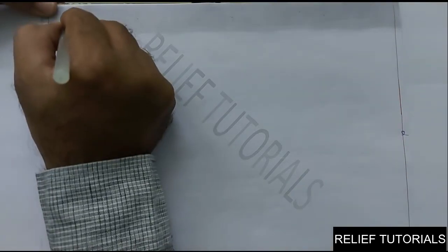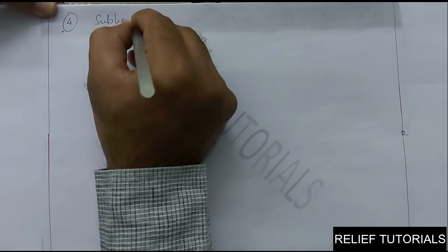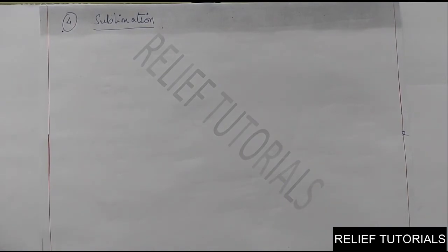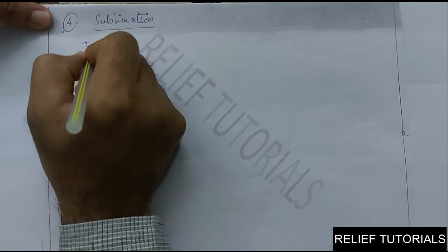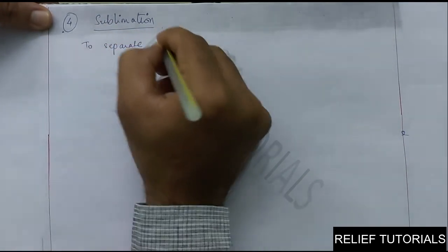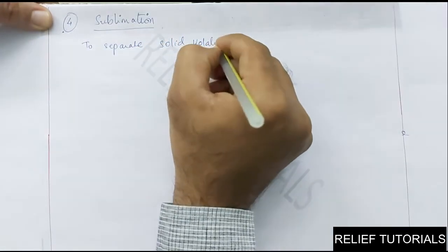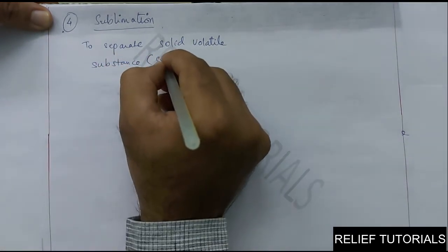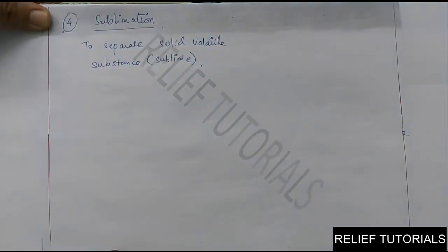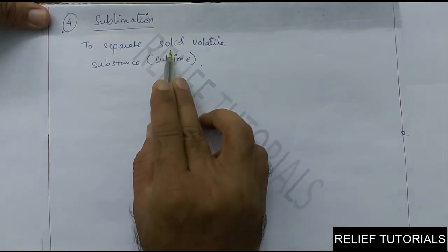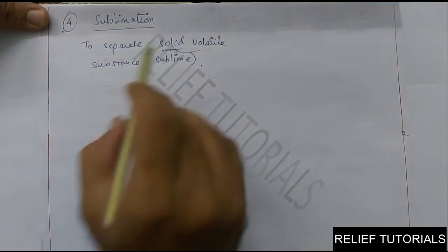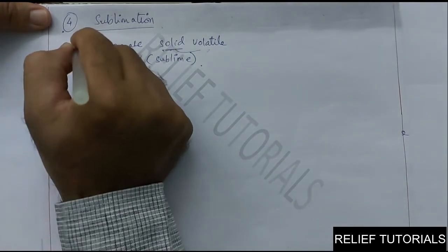The fourth process is the sublimation process. The name itself suggests it: sublimation is when a substance directly converts from solid to gas. This method is used to separate a solid volatile substance — also called a sublime — from a mixture. A solid volatile substance directly converts from solid to gaseous state.